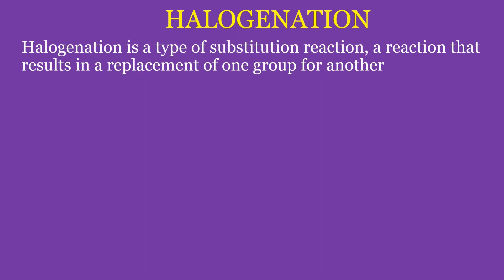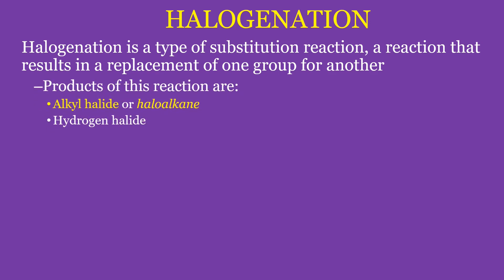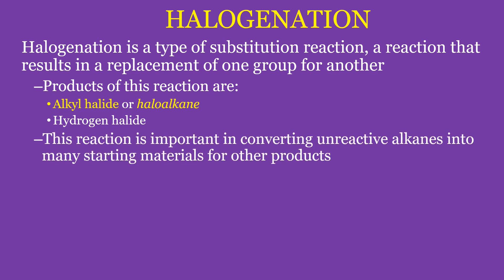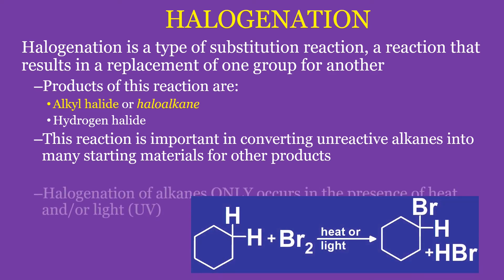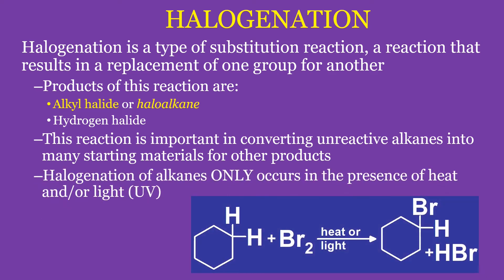Halogenation is a type of substitution reaction — a reaction that results in the replacement of one group for another. Products of this reaction are alkyl halide or haloalkane, and hydrogen halide. This reaction is important in converting unreactive alkanes into many starting materials for other products. Halogenation of alkanes only occurs in the presence of heat and light.